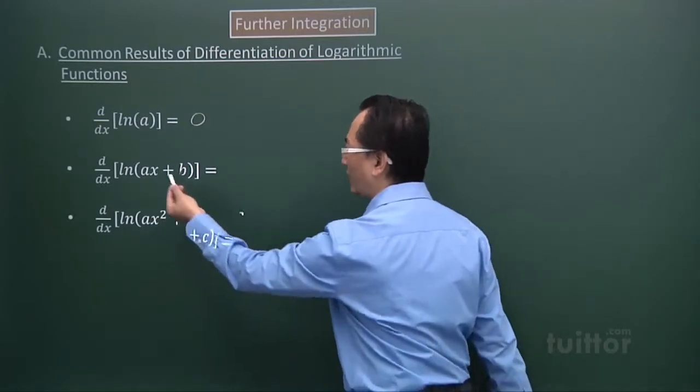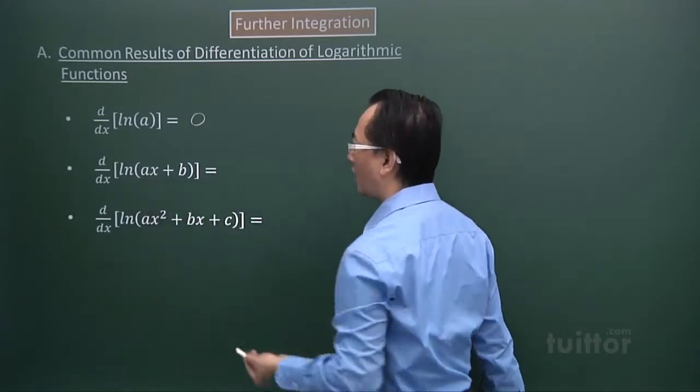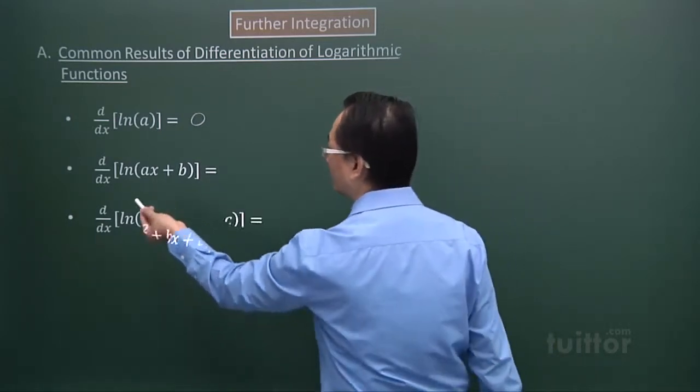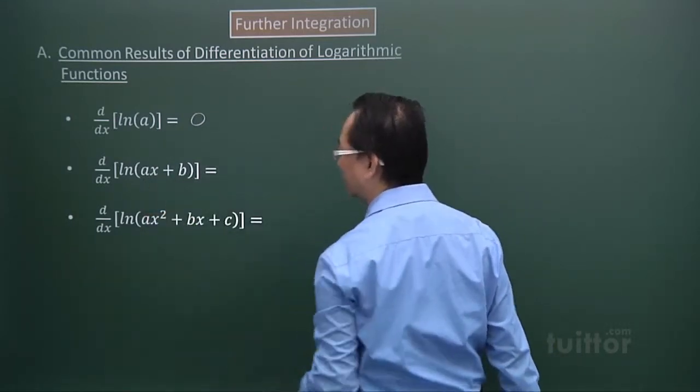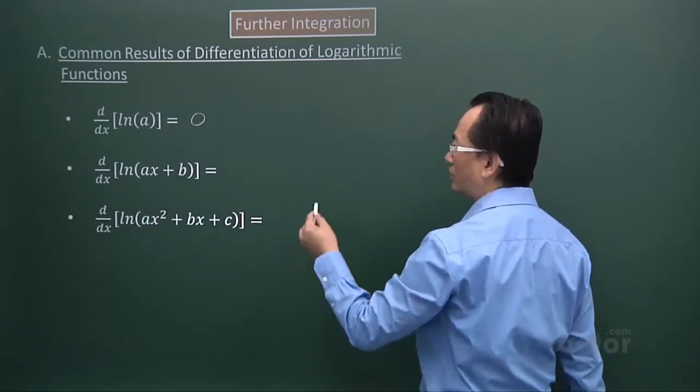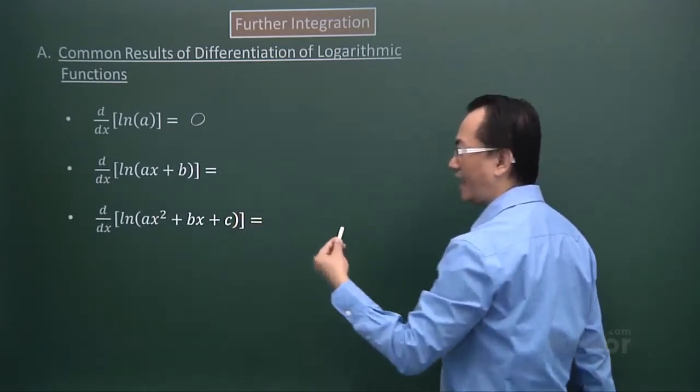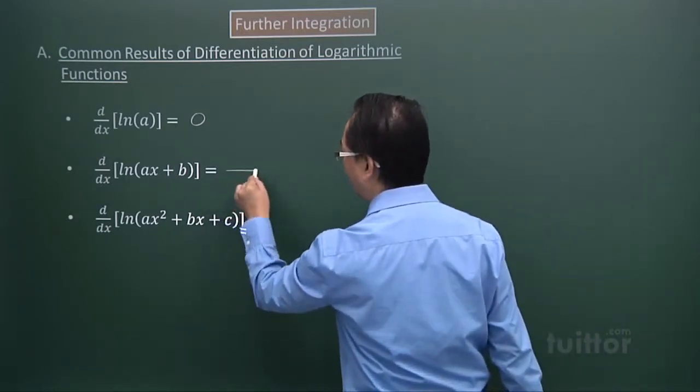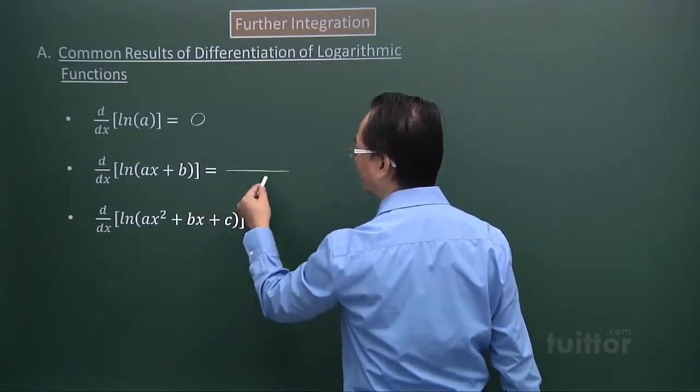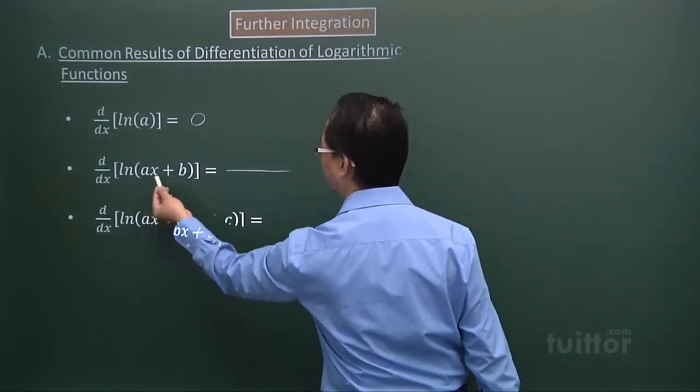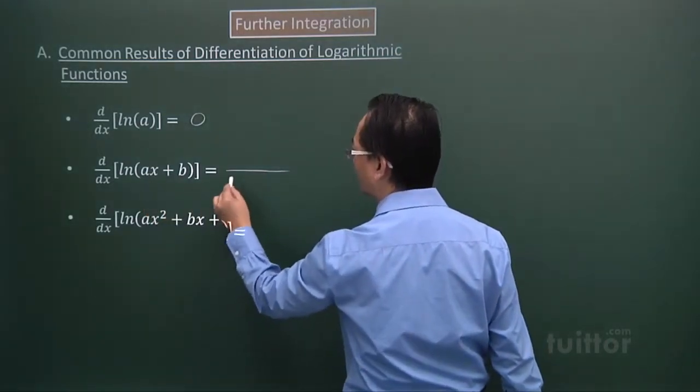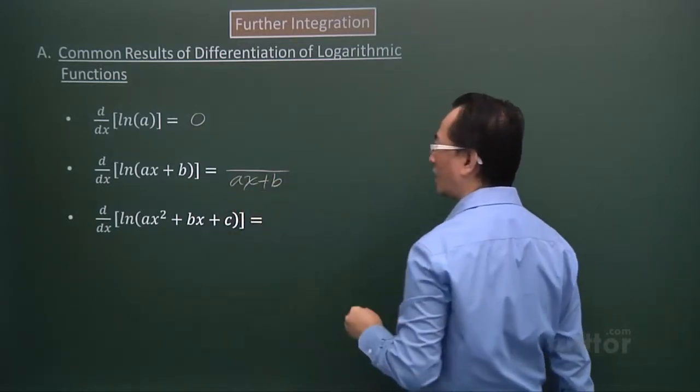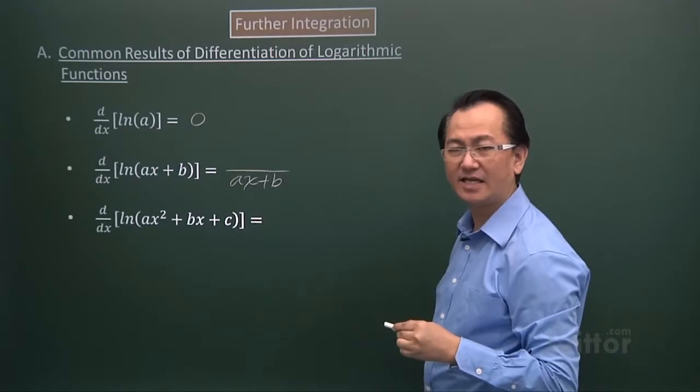Next, differentiating this expression, ln(ax + b). So ax + b is linear. So when I differentiate that, I have to expect a fraction. So the fraction, the denominator expression will be the same as what's in the ln function, ax + b. When I differentiate that linear expression, I have the coefficient of x, which is a.